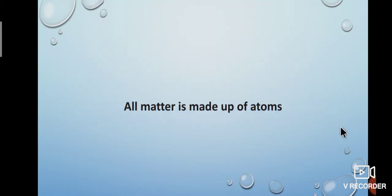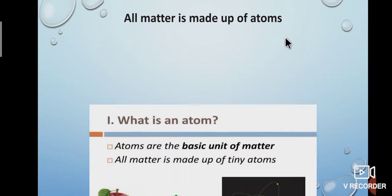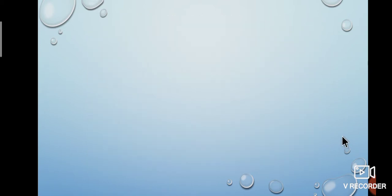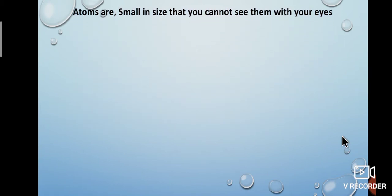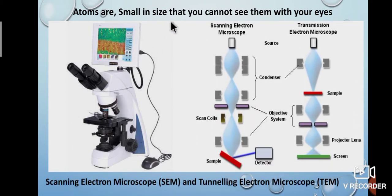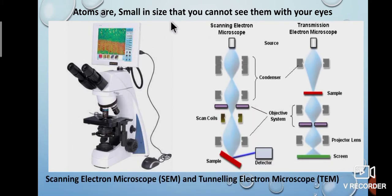How is matter structured? All matter is made up of atoms. What is an atom? Atoms are the basic unit of matter. All matter is made up of tiny atoms, very small in size. Matter is made up of tiny atoms that are small in size.